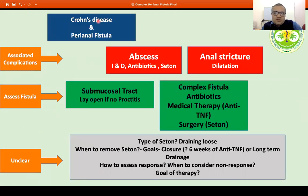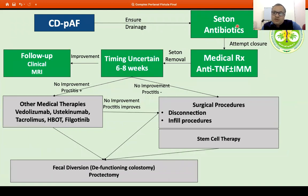For Crohn's disease and perianal fistula, you first treat associated complications like abscess. Most patients will need antibiotics, drainage with seton, and starting anti-TNFs. Once there is a response, you attempt closure with medical therapy; if successful, the seton is removed and patients are followed up. If no improvement or the fistula persists with active IBD, switch to other biologics or medical therapies. If there is no active IBD but the fistula remains open, surgical disconnection procedures may be attempted. There is an emerging role for stem cell therapy, possibly above surgical procedures in the algorithm. Finally, if patients do not respond, fecal diversion may be needed.